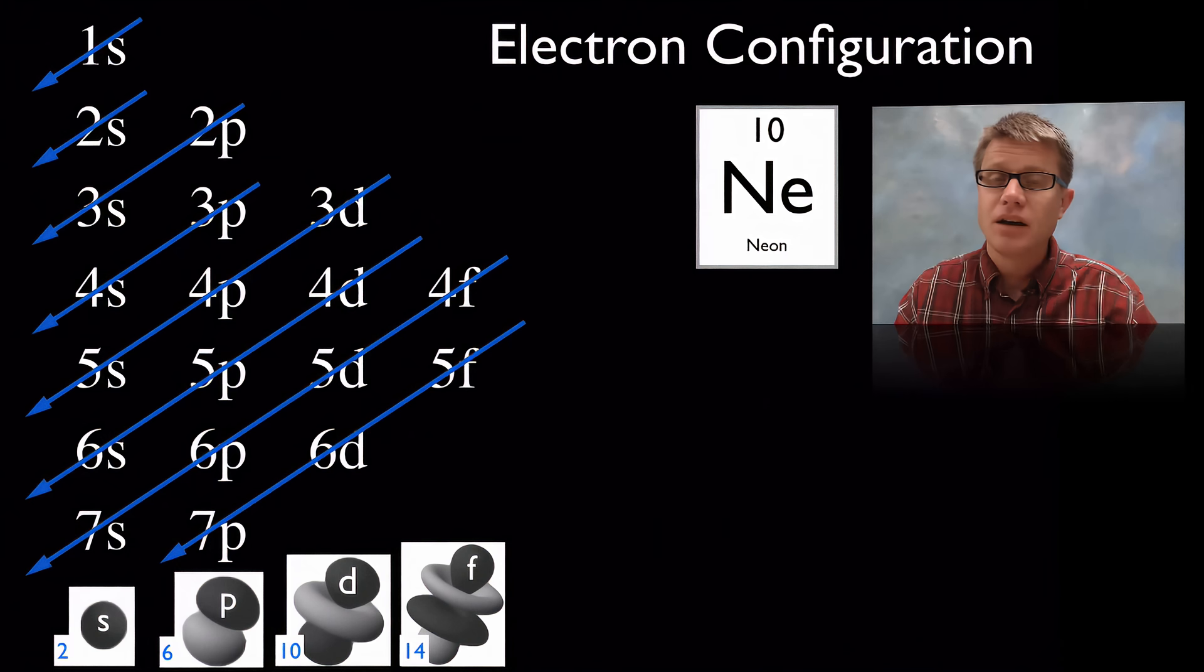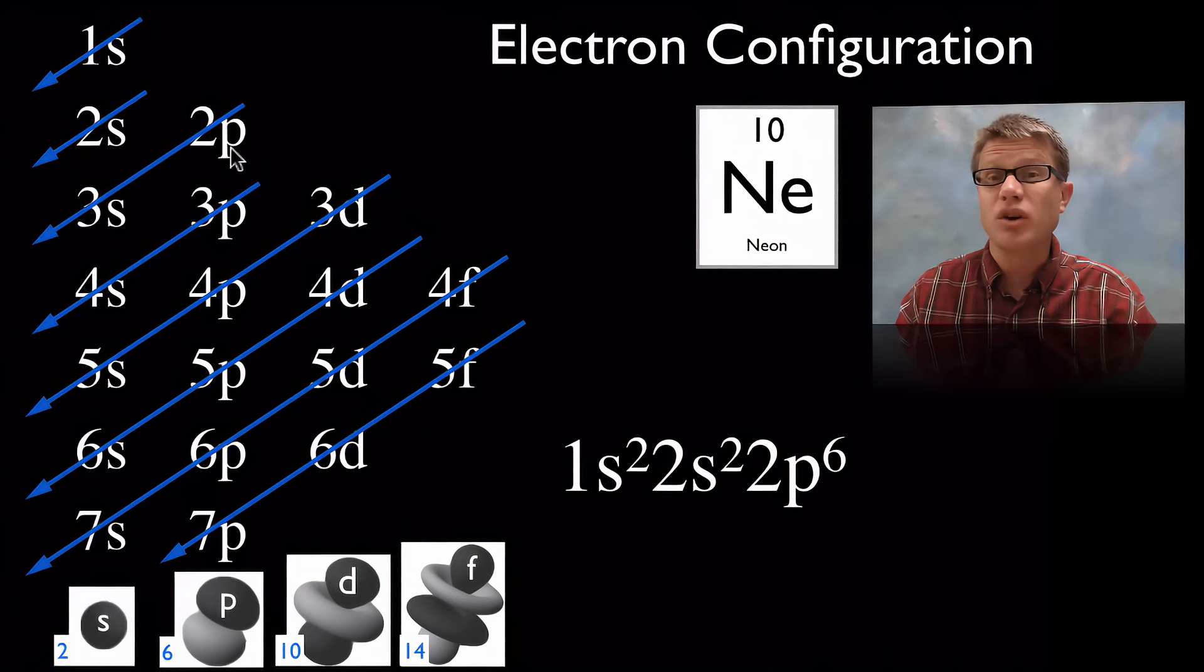What about neon? And again you could pause the video and always try it out. Neon is going to be this. So it's 1S2, 2S2. 2P, remember can have 6. And so we're going to write 6 there.